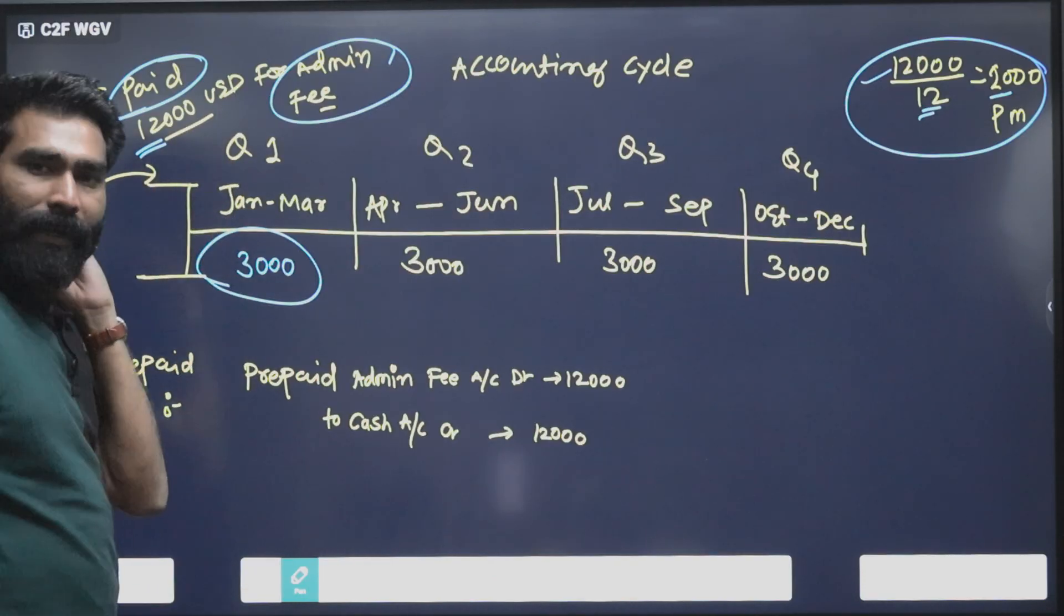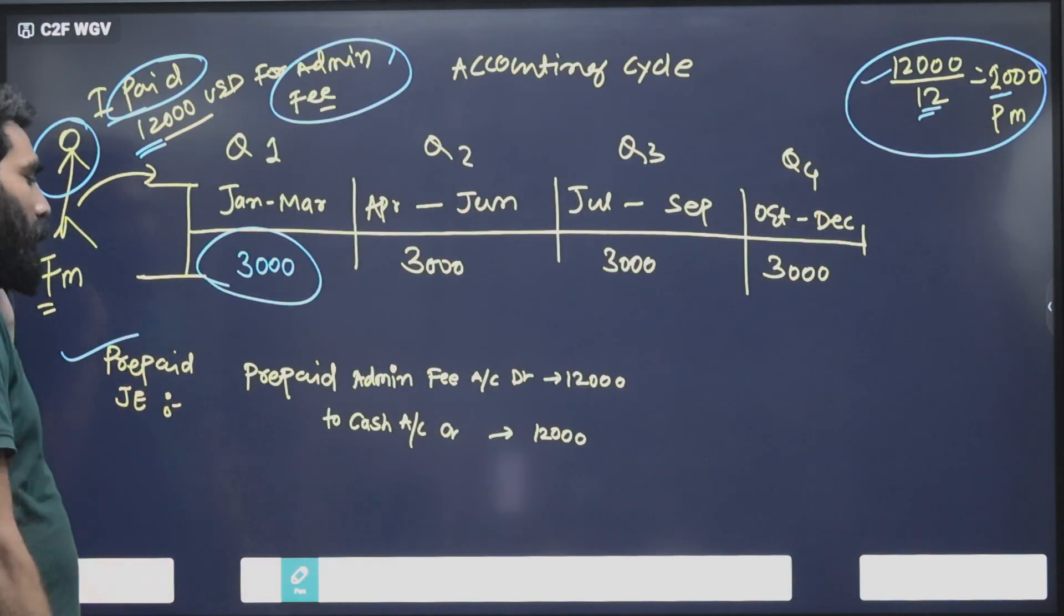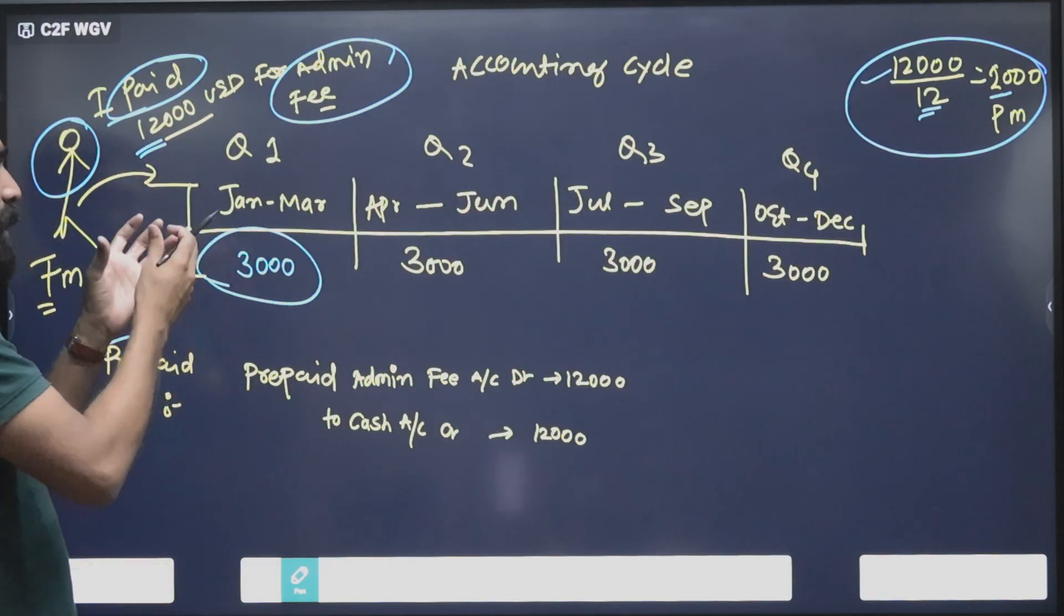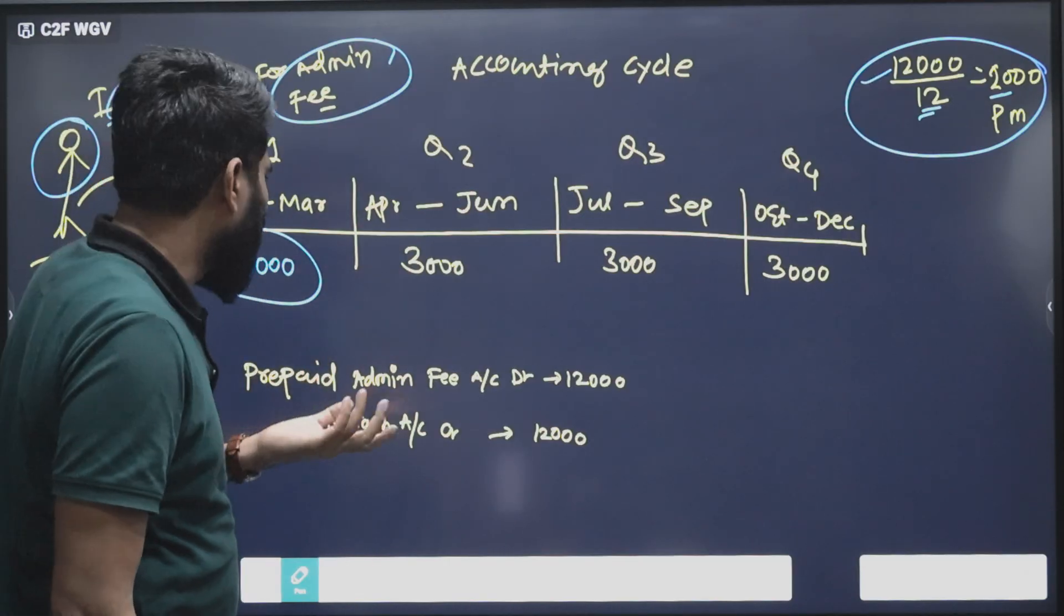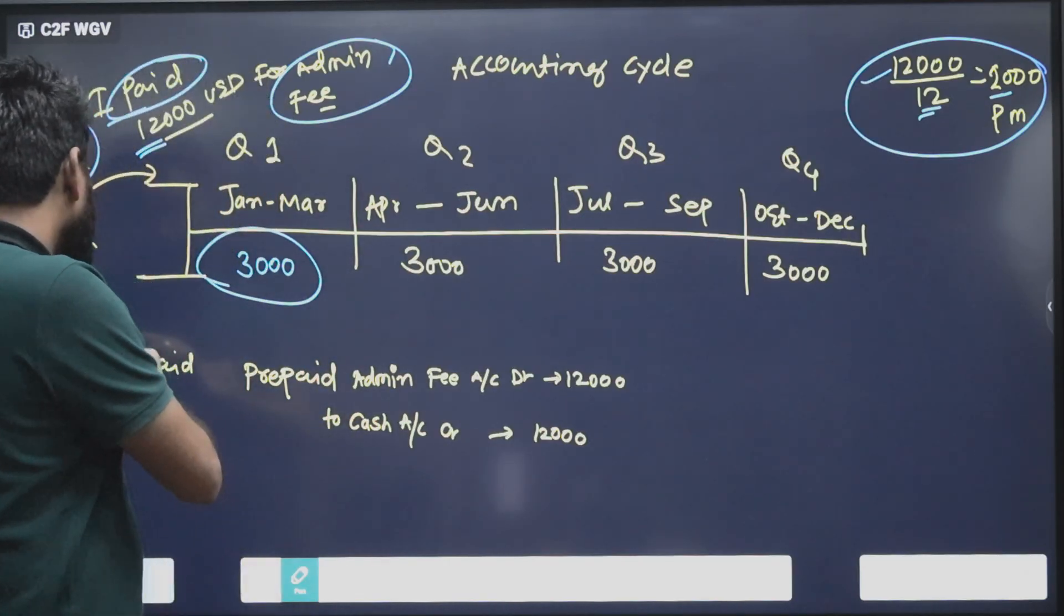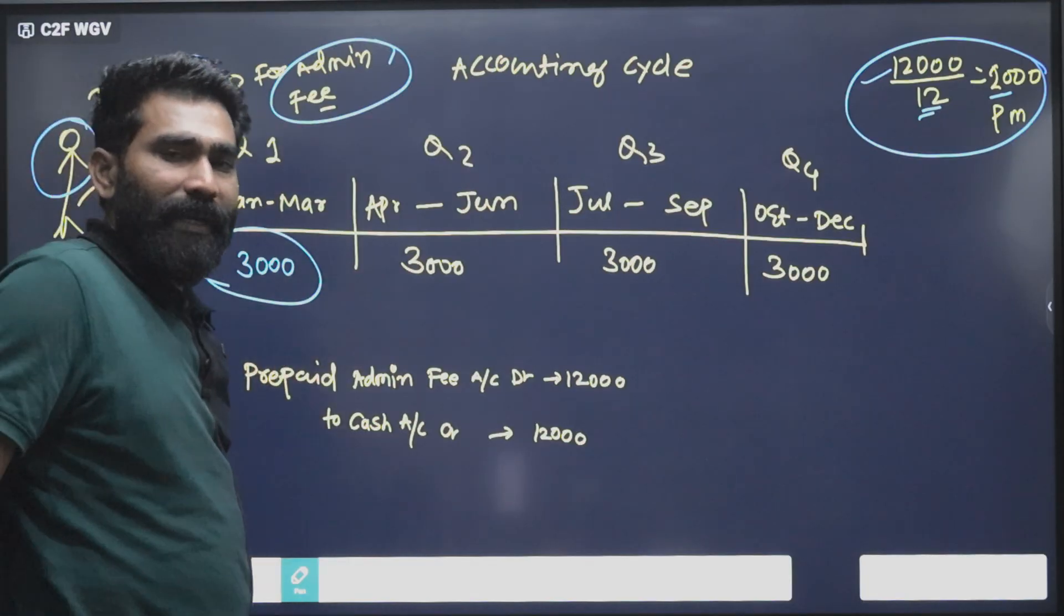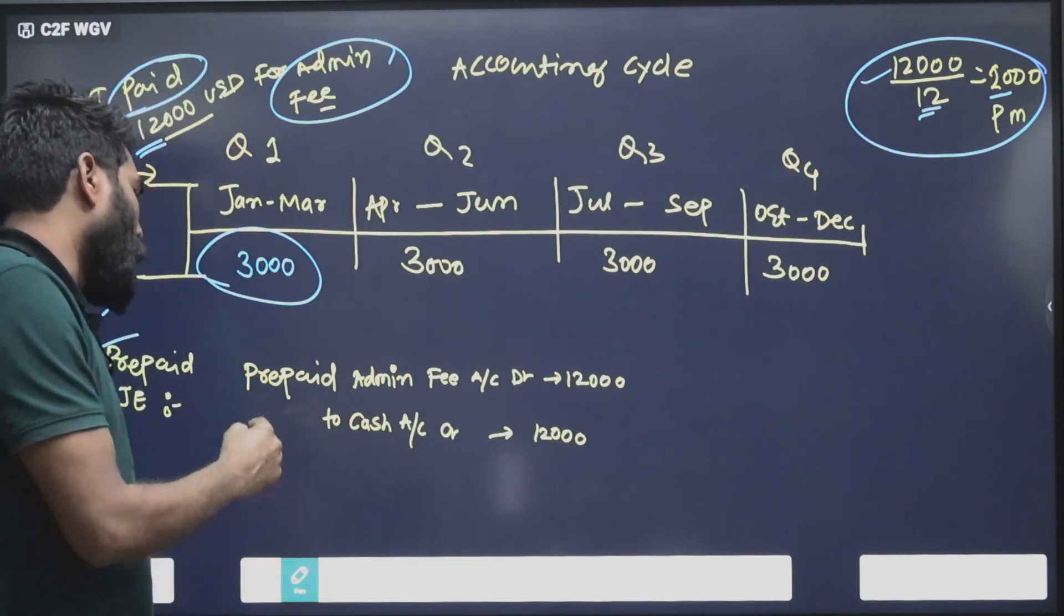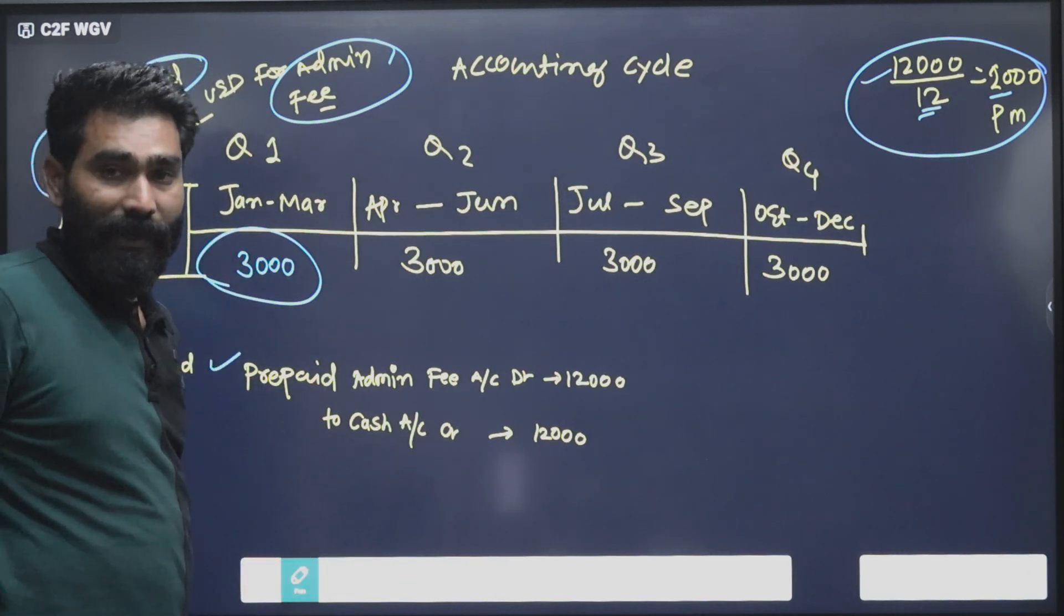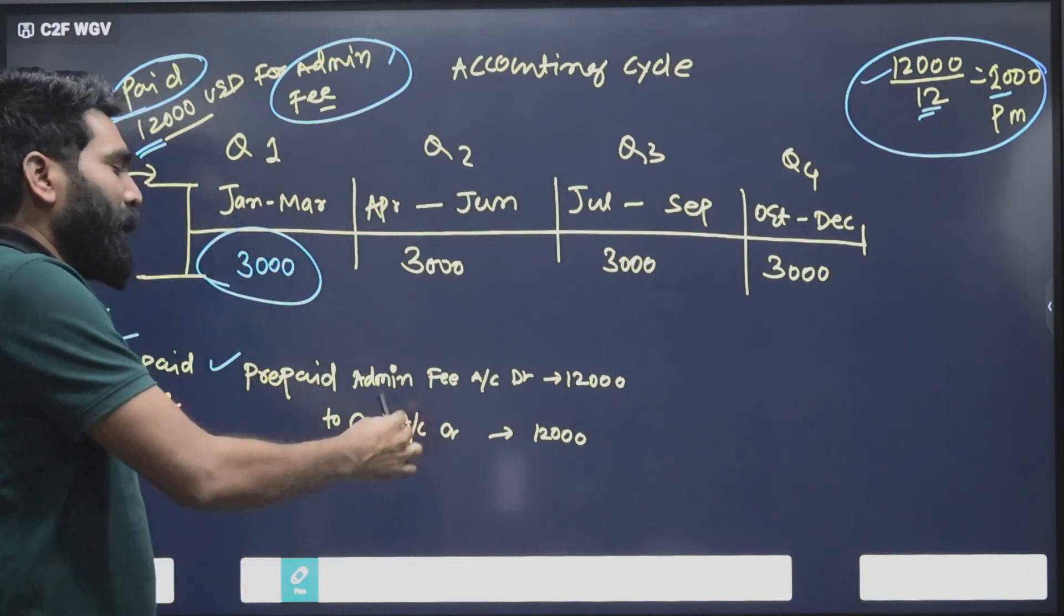That $12,000, first as an accountant you'll have to record it. If the fees were paid on January 1st or before that, you can update that date as the transaction date for the journal entry.